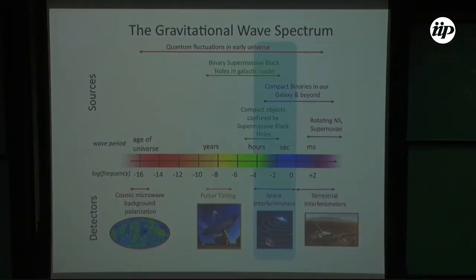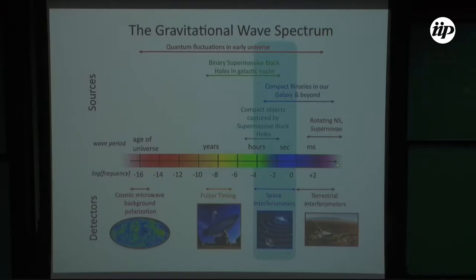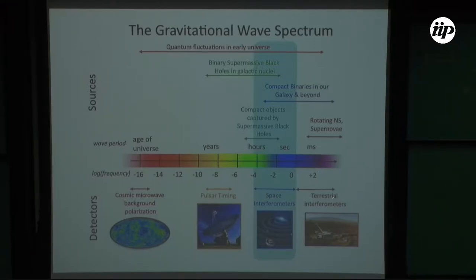When I talk about sources I'm going to concentrate only on particular types relevant to LIGO, Virgo, and terrestrial interferometers. The gravitational wave spectrum covers all possible frequencies up to the Hubble scale. On a logarithmic scale, about 100 Hz is here, and the peak sensitivity of interferometers is around 150 Hz.